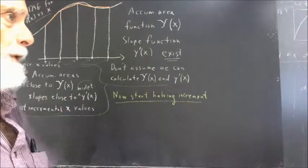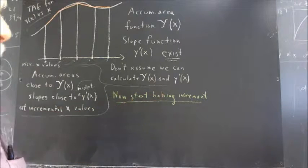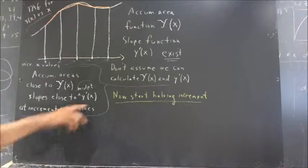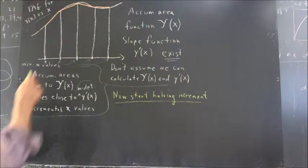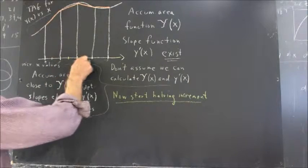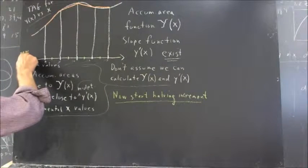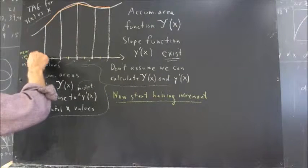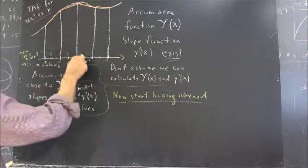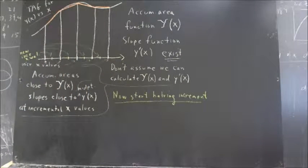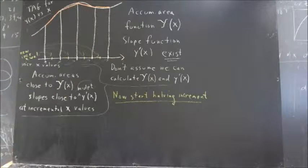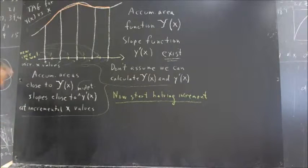Now let's consider what happens to the closeness of these approximations if we halve our increments. We have new incremental x values in addition to our old ones. And now our trapezoidal approximation graph becomes, as we've seen, approximately four times as accurate, depending on how nicely this function behaves. It's going to become more than twice as accurate and significantly more — typically four times as accurate.